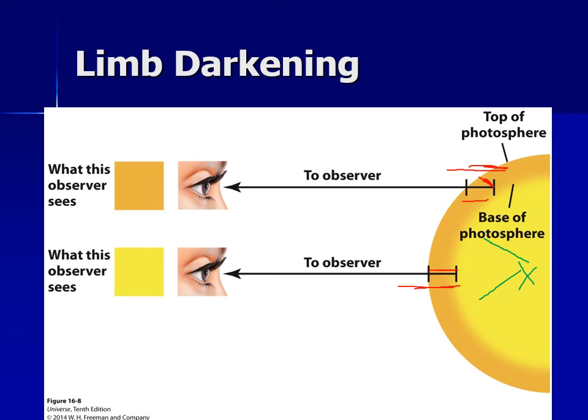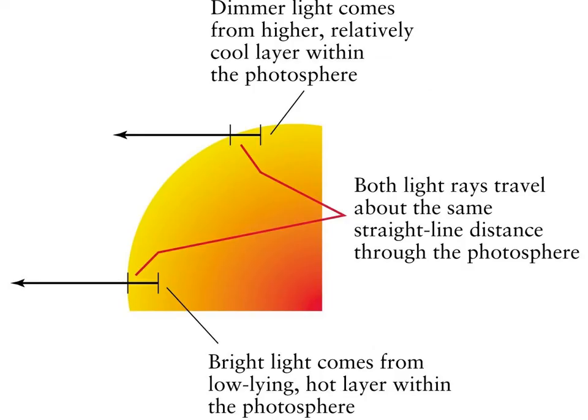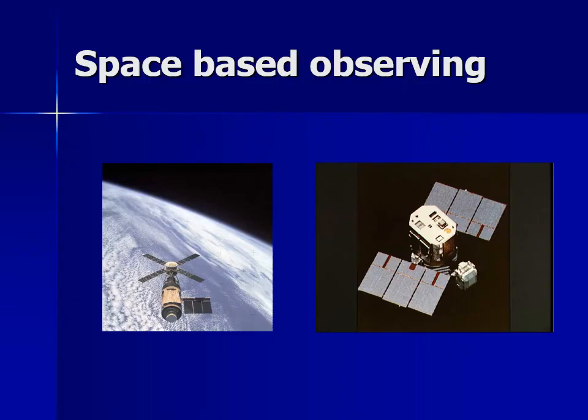Remember, the hotter something is, the brighter it is. So limb darkening is directly related to being able to see deeper into the sun where it's actually hotter. Another diagram here describes how limb darkening works. Ultimately, what we want to do is observe the sun from space, and that'll be the topic of my next little mini lecture.